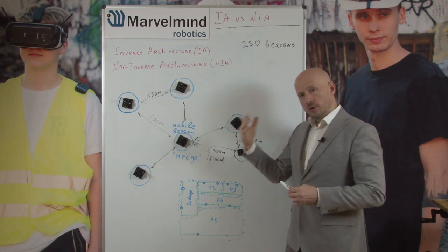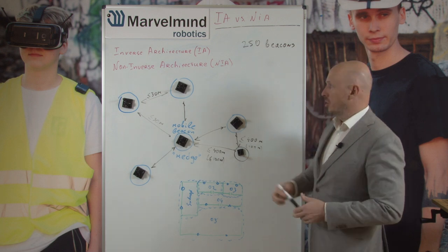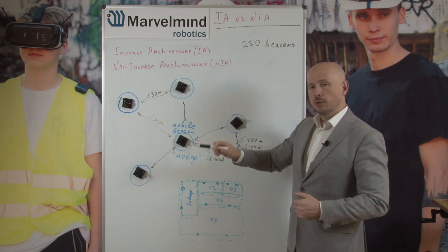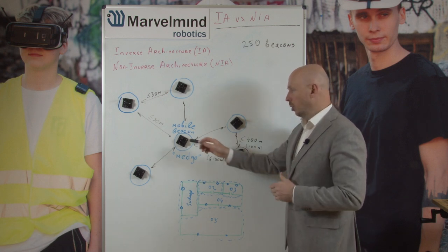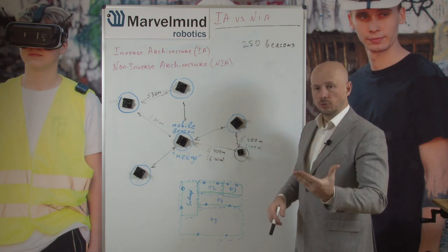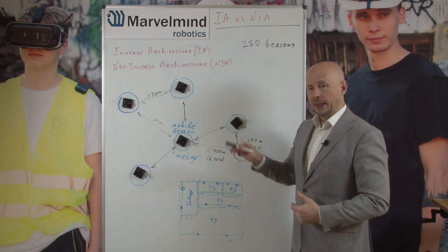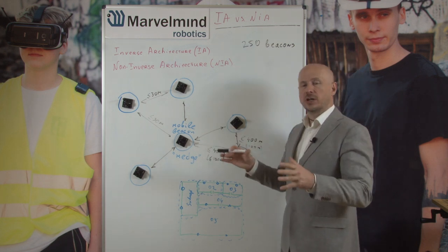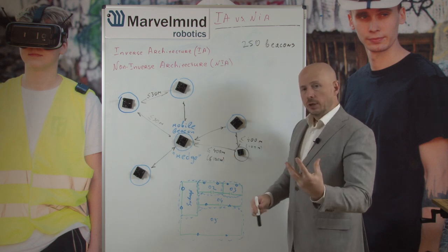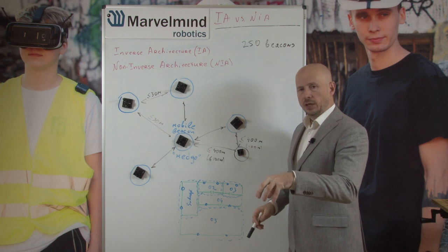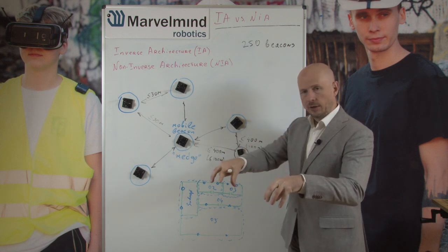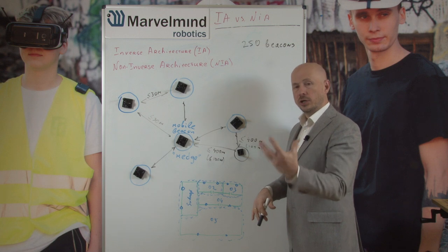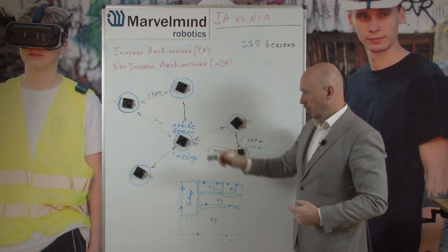The key difference between inverse and non-inverse architecture is location update rate. In non-inverse architecture, at any given moment you can only locate one mobile beacon. With one drone in a warehouse that's fine — update rate per drone equals system rate, around 8–12 Hz. But with 10 drones, the system sequences through each drone, so if the system runs at 10 Hz, each drone only gets 1 Hz.